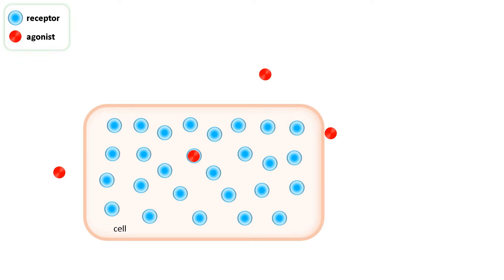The response evoked in the cell can be measured and plotted on a graph as a function of the concentration of agonist around the cell. The scale here is from 0 to 100% of the maximum possible response. The red cross marks the response at this agonist concentration.